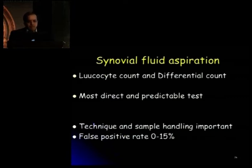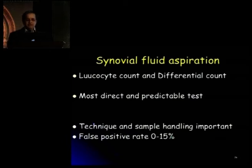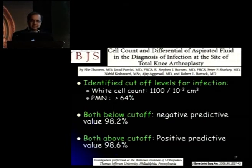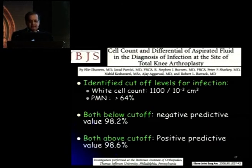In synovial fluid aspiration, you're looking for WBC count and differential WBC count. This is the most direct, predictable, and fairly simple thing to do, especially for the knees. The hip needs more elaborate preparation, taking the patient to theater with ultrasound-guided or image intensifier-guided aspiration. The technique and sample handling are important because false positive rates can be as high as 15%. Parvizi's group identified cut-off levels significantly — today, a WBC count of 1,100 or more and greater than 64% polymorphonuclear cells is suggestive of infection. The negative predictive value when both are below cut-off is almost 98%, and positive predictive value when both are above cut-off is again 98%.